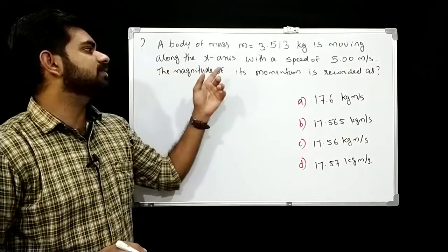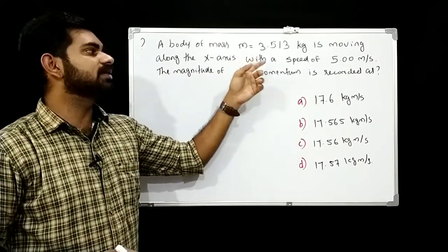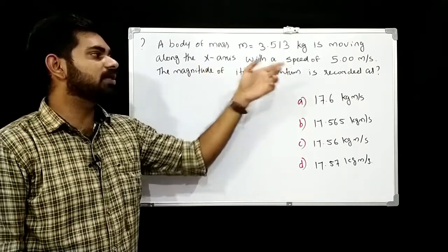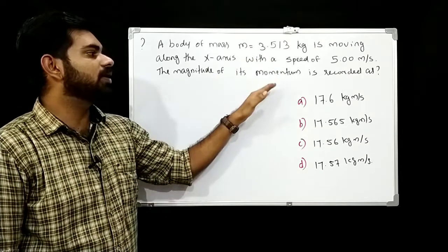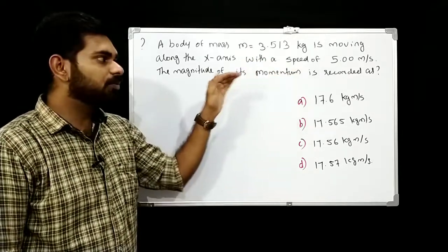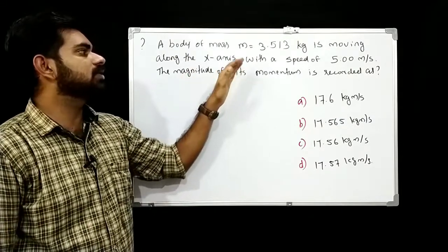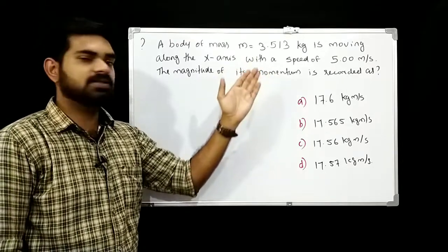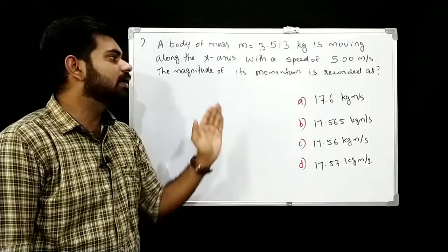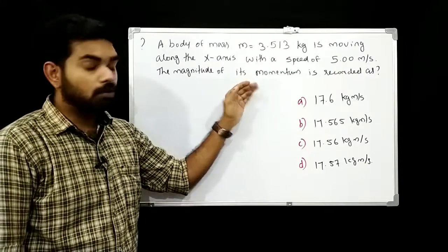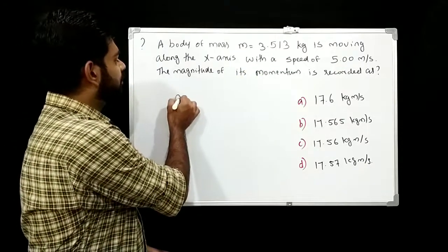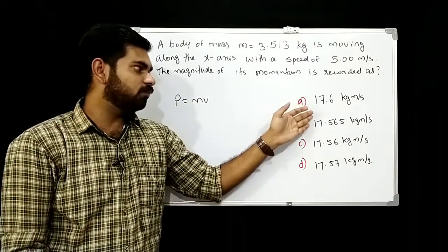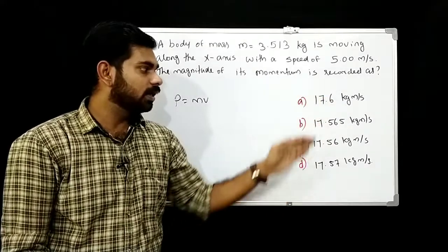A body of mass 3.513 kg is moving along the x-axis with a speed of 5 m per second. The magnitude of its momentum is recorded as — option A: 17.6 kg·m/s.